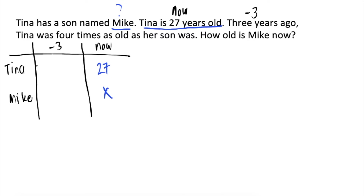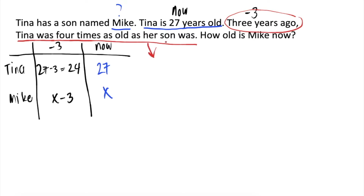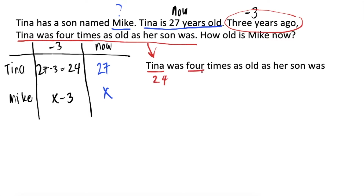3 years ago, ang age ni Tina should be 27 minus 3, that's equal to 24. Kay Mike naman, since ang age niya now is x, 3 years ago, his age should be x minus 3. So, paano natin masasolve sa x? Let's go back to the problem. 3 years ago, Tina was 4 times as old as her son. So, ibig sabihin, ito ang relationship ng age nila 3 years ago. We can work with this. Let's convert this statement into figures or into an equation. 3 years ago, si Tina is 24 years old — 4 times her son's age 3 years ago is x minus 3.